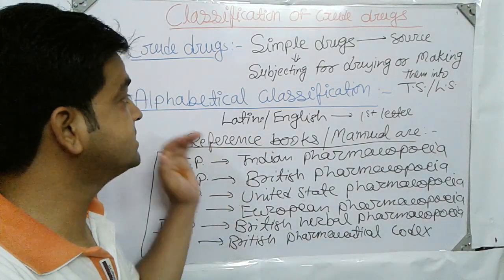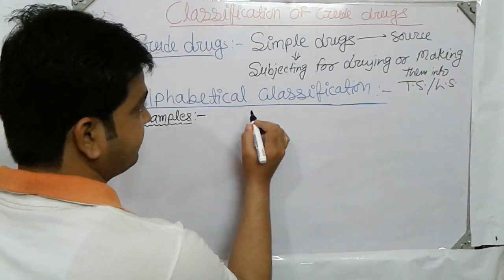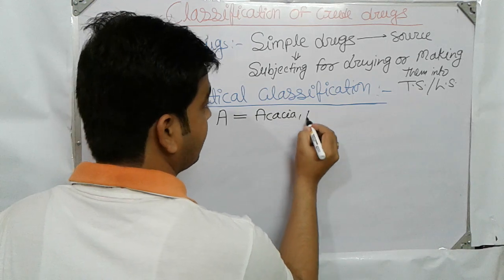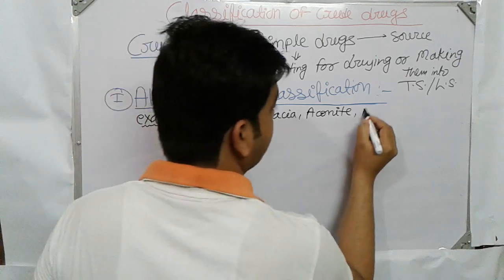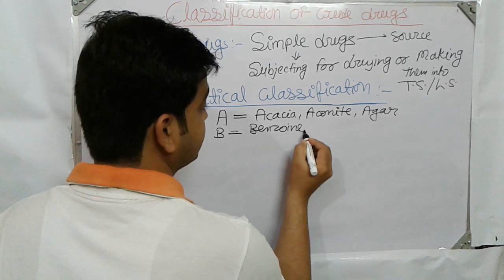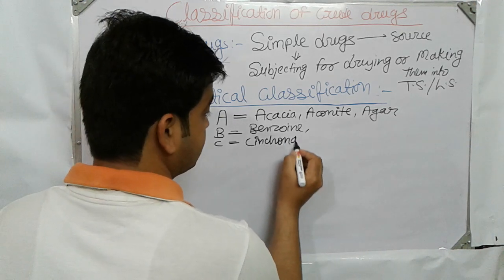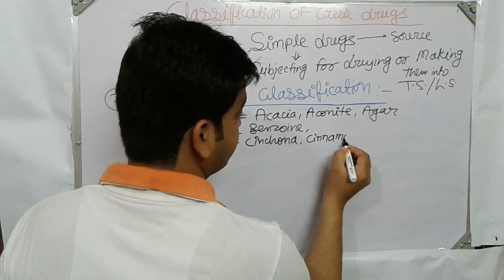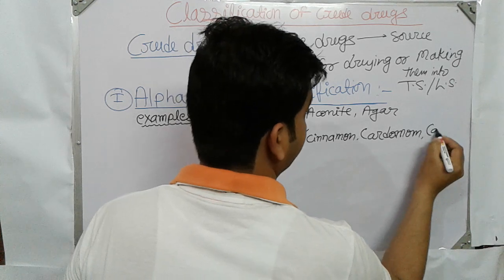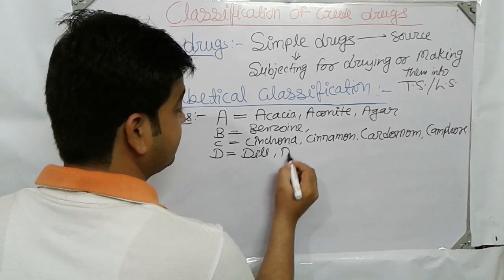Let us understand alphabetical classification with different examples. A for Acacia, Aconite, Agar. B for Benzoin. C for Cinchona, Cinnamon, Cardamom, Camphor. D for Dill, Digitalis.